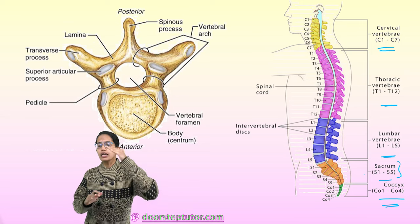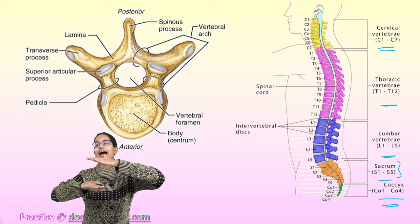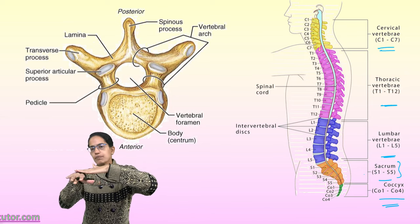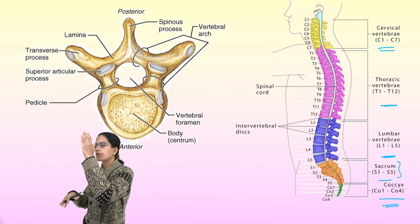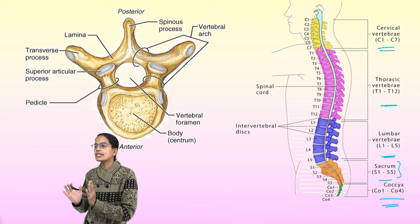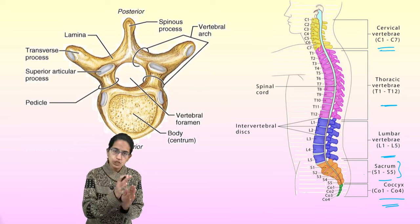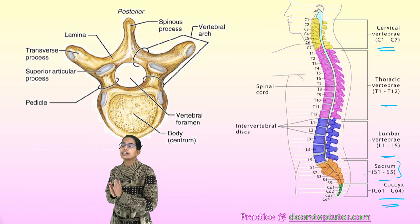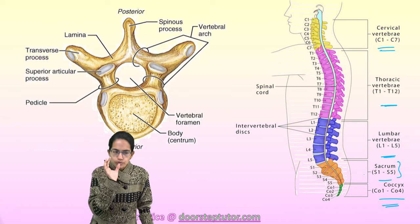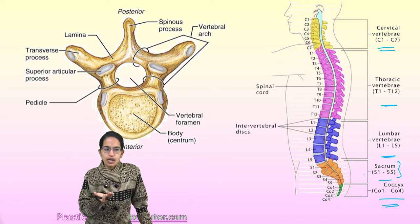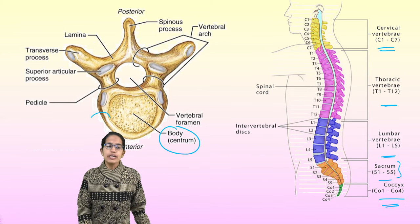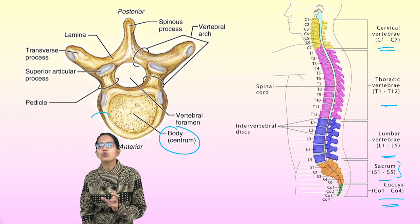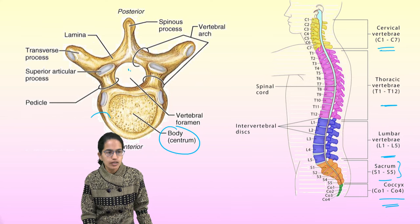Each of the vertebrae has an intervertebral disc, which acts as a shock absorber. The vertebrae are bound together by ligaments to avoid dislocation. The center of each vertebra is cylindrical in shape and is known as the centrum.